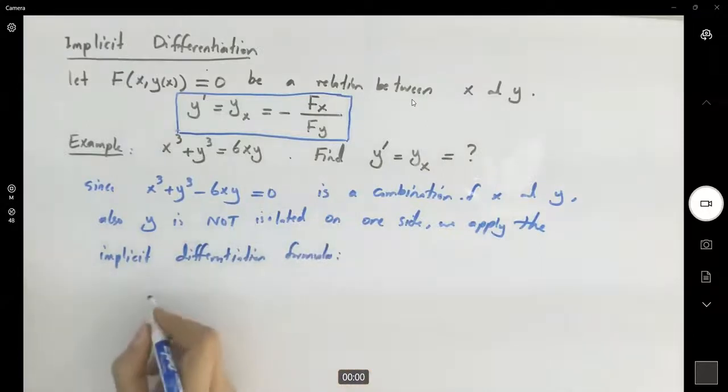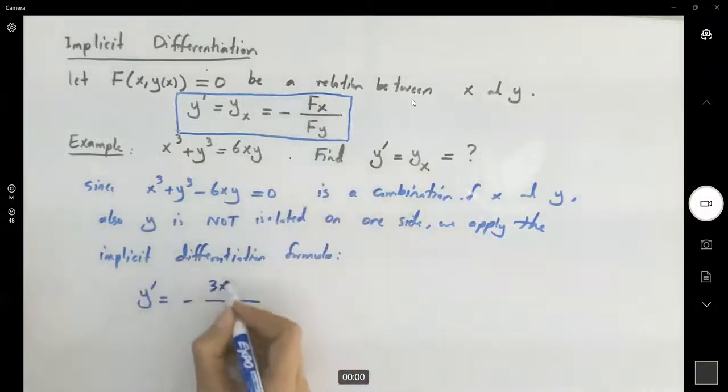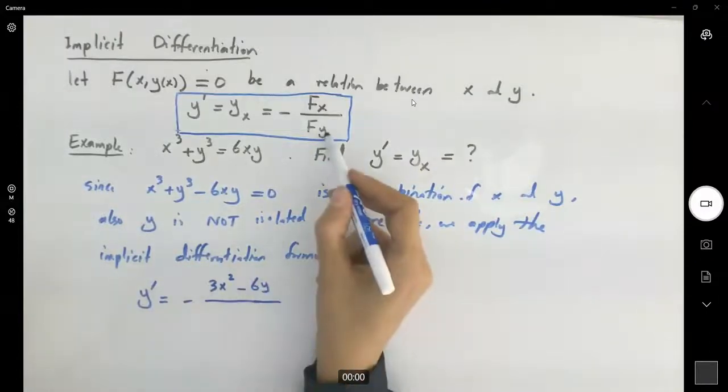So y' equals minus—don't forget to put the minus sign here—∂F/∂x, the partial derivative of F with respect to x. It's going to be 3x² - 6y, divided by ∂F/∂y.